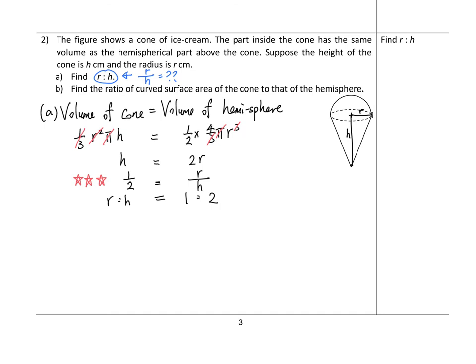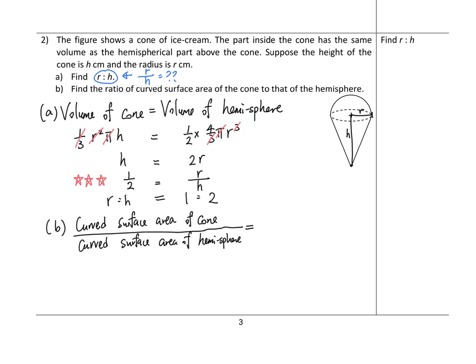So r : h = 1 : 2. For Part B, find the ratio of the curved surface area of the cone to that of the hemisphere. The curved surface area of the cone is π r l, where l is the slant height. Using the Pythagorean theorem, l = √(h² + r²).